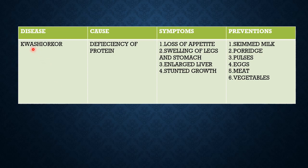The last deficiency disease is kwashiorkor. Kwashiorkor is caused due to the deficiency or lack of protein in one's diet. The symptoms include loss of appetite, swelling of legs and stomach, enlargement of the liver, and stunted growth — meaning the growth stops. This disease can be overcome by having skimmed milk — milk from which all the milk fat has been removed — as well as porridge, all types of pulses, eggs, meat, and a lot of vegetables.